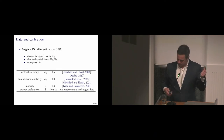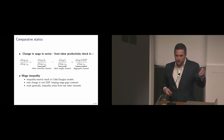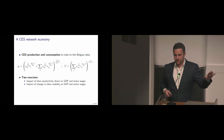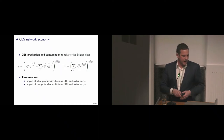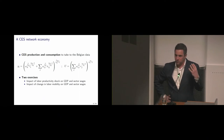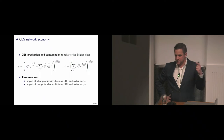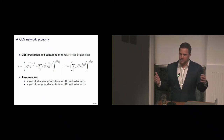This is a non-parametric setup in the sense that it holds for many flexible functional form assumptions and elasticities. Once we take this to data, we calibrate it using Belgian data and impose a CES structure of production. Output of sector I is given by combining labor with intermediate inputs, with some elasticity of substitution between labor and intermediate inputs. There's also a CES aggregator on the consumption side. We ask two questions: what happens if there's a productivity shock — how do wages, labor, and GDP change? And what happens if some policy reduces labor frictions across the board?